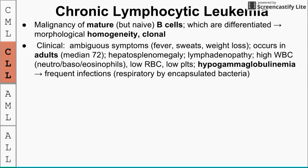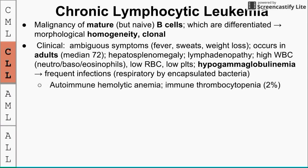CLL presents with the same ambiguous symptoms — fever, night sweats, weight loss. It occurs in adults with a median age of 72. We see hepatosplenomegaly and lymphadenopathy. Labs show high white blood count, low red blood count, low platelets, and hypogammaglobulinemia, which leads to frequent infections by encapsulated bacteria. Two associated conditions are autoimmune hemolytic anemia (AIHA) and immune thrombocytopenia (ITP), together called Evans syndrome. The faulty immunoglobulins produced by CLL cells attack red blood cells and platelets, causing them to be cleared.